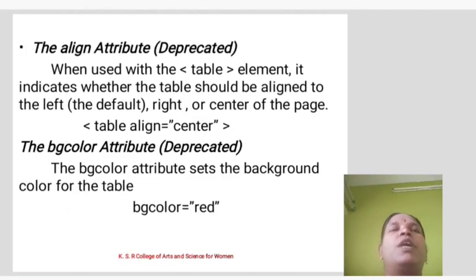The align attribute (deprecated): When used with the table element, it indicates whether the table should be aligned to the left (default), right, or center of the page. Example: table align equals center. The bgcolor attribute (deprecated) sets the background color for the table. Example: bgcolor equals red.